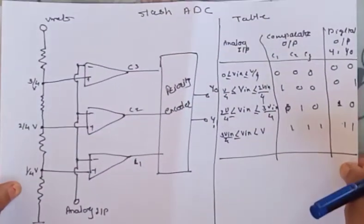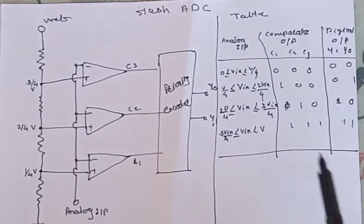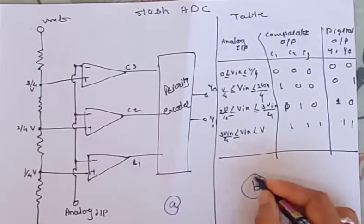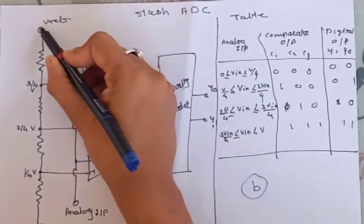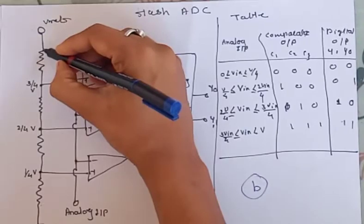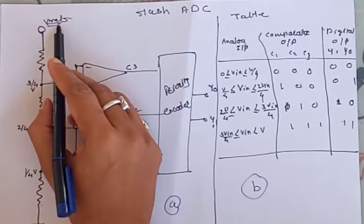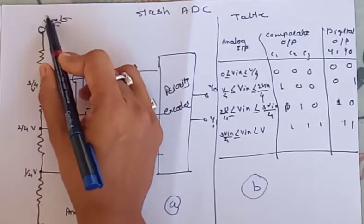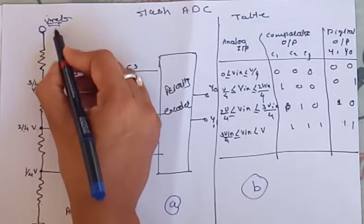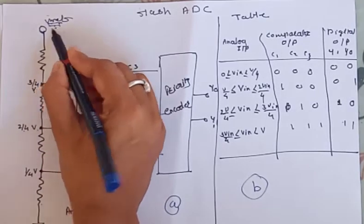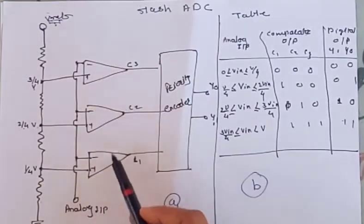Let us move towards the next ADC, that is flash ADC. Figure A shows the block diagram and figure B shows the truth table. Here you have four resistors connected in series. At the first terminal, the reference voltage is applied and the last terminal is grounded. This reference voltage is divided so that 3/4 of V-reference appears at one point, 2/4 at another, and 1/4 at the next.